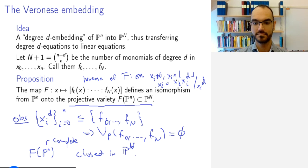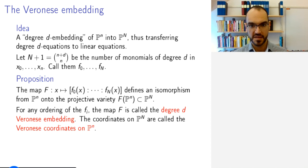Technically we get different maps if we reorder the monomials differently. But for any ordering of the monomials, this map is called the degree d Veronese embedding.